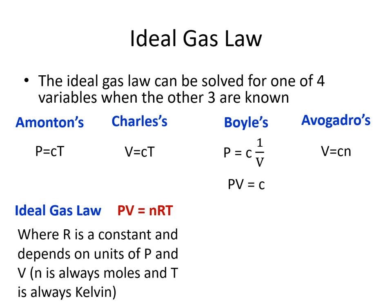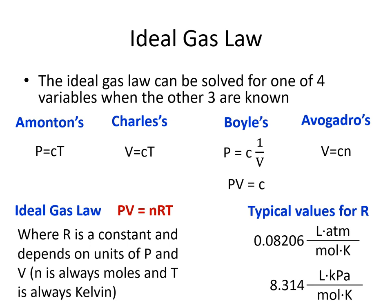Here are typical values for R. If we're using liters for volume and atmospheres for pressure, we use R = 0.08206 L·atm/(mol·K). Another common version has units of L·kPa/(mol·K), where R = 8.314. These units are necessary so that everything cancels properly in the equation.